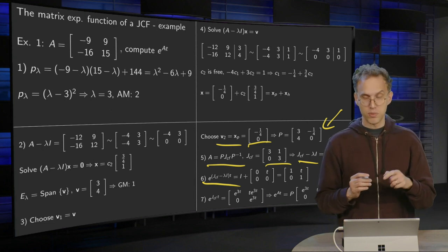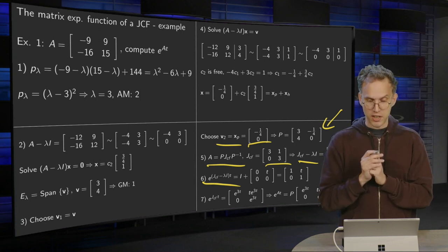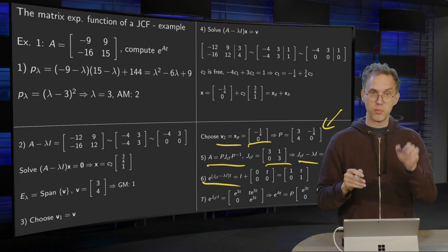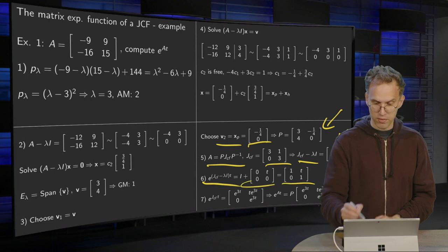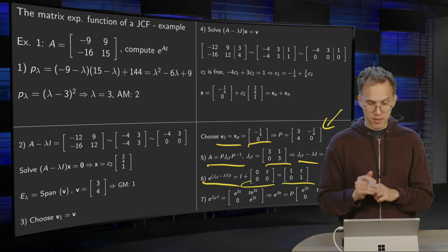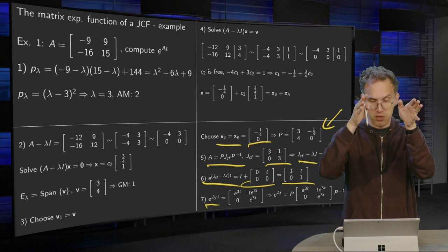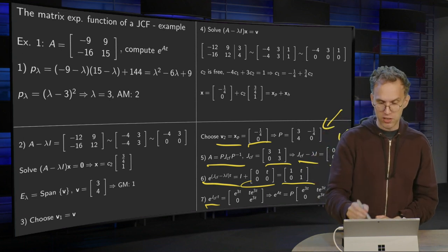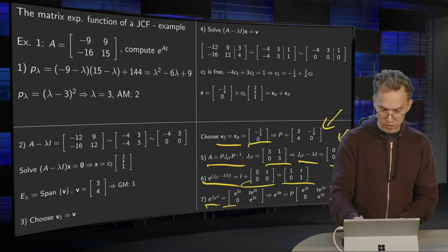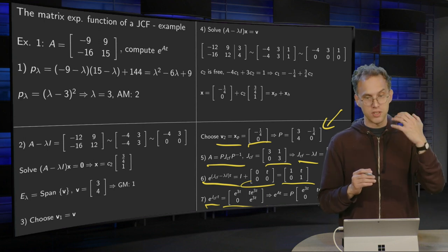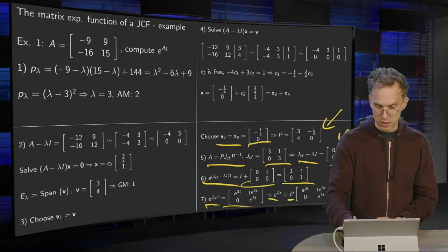And now it's not so difficult to compute the matrix exponential of this matrix here, because if you compute the square of it, you already get 0. So e to the power JCF minus lambda I times t is just the first two terms. And then e to the power JCF minus lambda I times t times e to the power lambda I times t, which just gives us a factor e to the power 3t everywhere. That's what we have over here. And then because A is similar to JCF, e to the power At equals P times this matrix times P inverse.